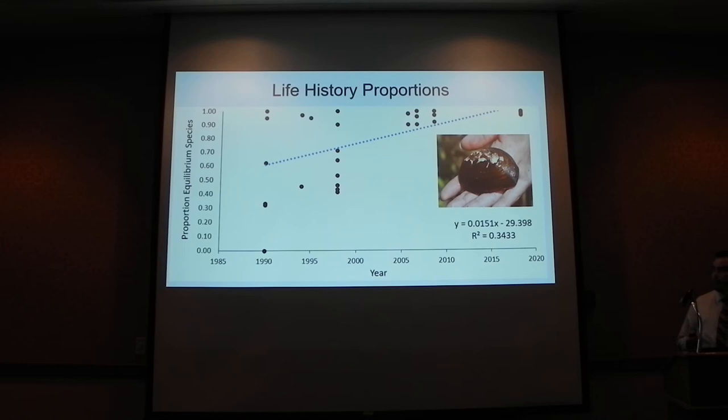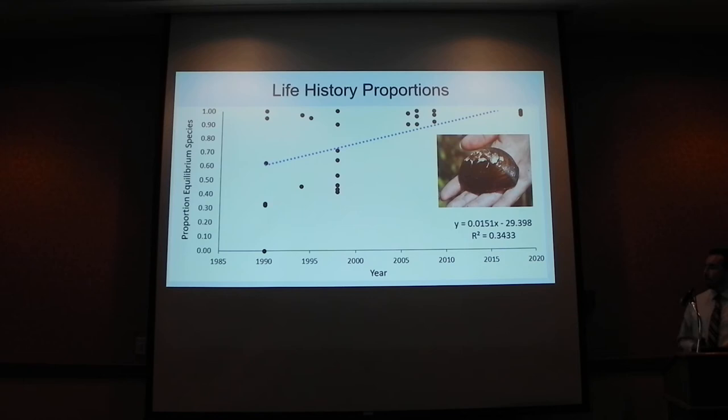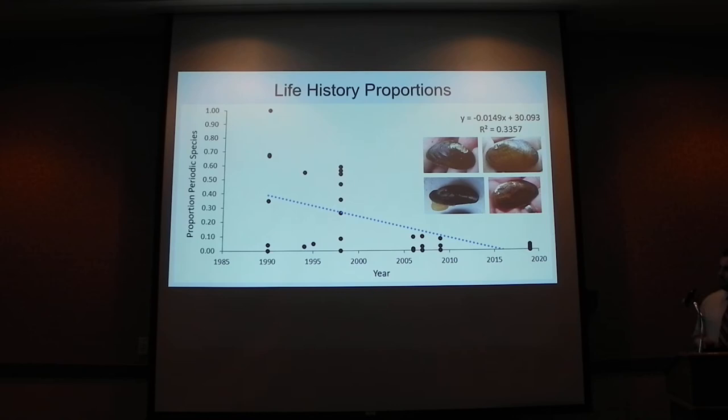Looking at life history strategies through the proportion of equilibrium species — just the eastern elliptio — we see that in a number of segments they were not the dominant fauna historically, but by the 2000s and our current surveys they have dominated and taken over the system. In our surveys, 98% of the catch-per-unit effort were eastern elliptio, which clearly wasn't the case throughout the 90s. The inverse is true for the periodic species: we did not find them the way they were found in the 90s, when they were the dominant fauna in many segments.